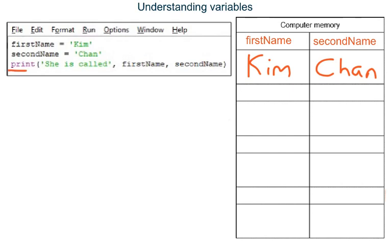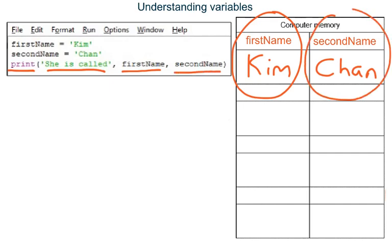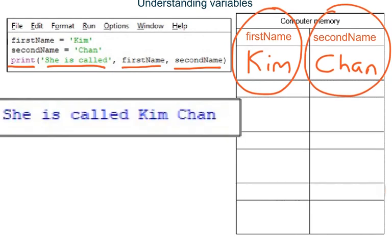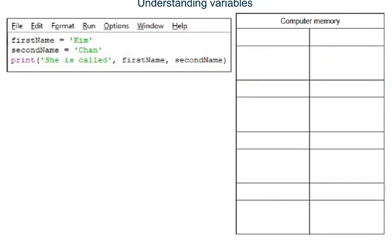Line 3 outputs the string she is called, then it looks up what is stored in variable first name and outputs that, then it looks up what is stored in variable second name and outputs that. The program has now finished running so the variables and everything in them are deleted from the computer's memory. If you see the word assign, assigning, or assignment, it means storing data in a variable.